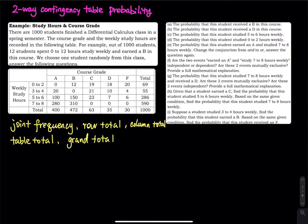This problem has a two-way contingency table. I have one contingency table followed by a bunch of probability questions. I try to think of all the possible questions, so that makes this problem very comprehensive. There are 1,000 students who finished a differential calculus class in a spring semester. The course grade and the weekly study hours are recorded in the following table.